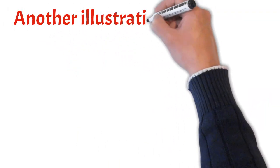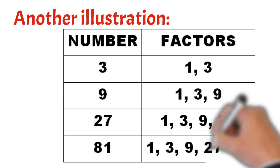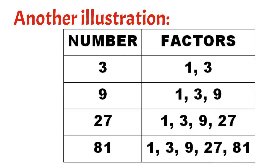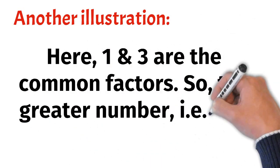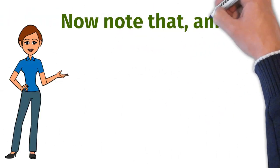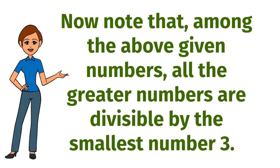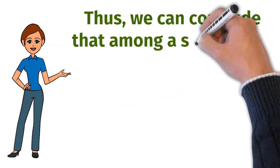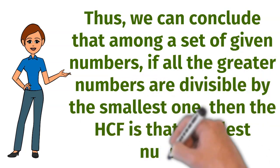Let's discuss one more example. Number 3 has factors 1, 3. Number 9 has factors 1, 3, 9. Number 27 has factors 1, 3, 9, 27. Number 81 has factors 1, 3, 9, 27, 81. Here, 1 and 3 are the common factors, so the greater number — that is 3 — is the HCF. We can conclude that among a set of given numbers, if all the greater numbers are divisible by the smallest one, then the HCF is the smallest number.